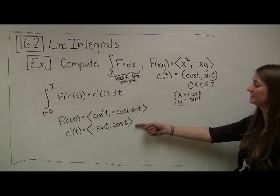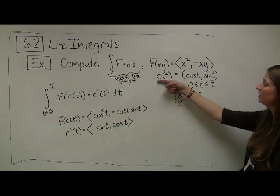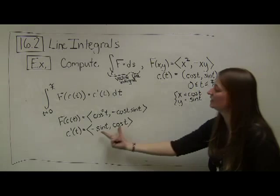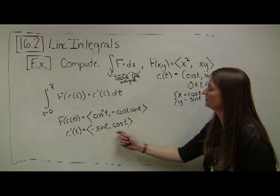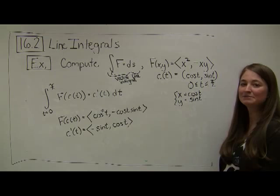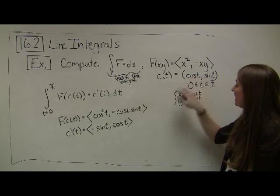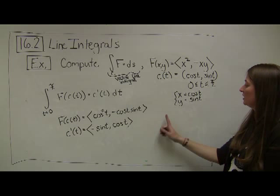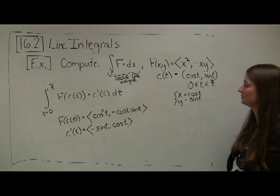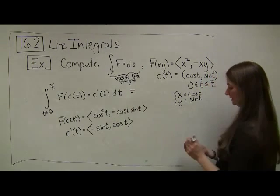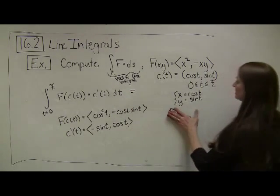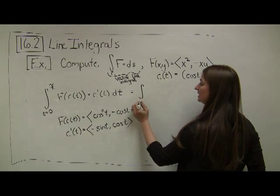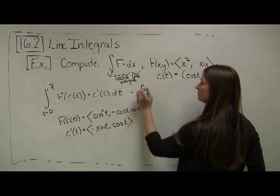Notice I flip-flop notation here — when describing the path I use points in space, but for the derivative I describe it as a set of vectors. These are two representations of the same thing, whether they're tips of vectors or points in space. Now I'll erase some of the scratch work, and this integral goes from t equals 0 to pi over 2.